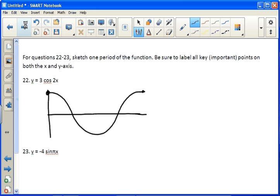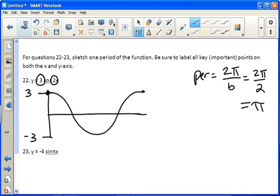My b is 2. So remember, period is 2 pi over b. So that's 2 pi over 2, which is pi. So I go all the way over to pi. And then I do the midpoint of that, which is pi over 2. The midpoint of that, which is pi over 4. And then between pi over 2 and pi, right here, will be 3 pi over 4.